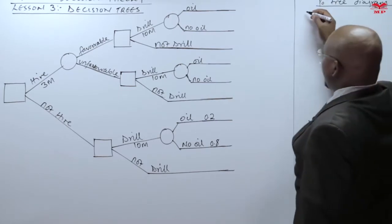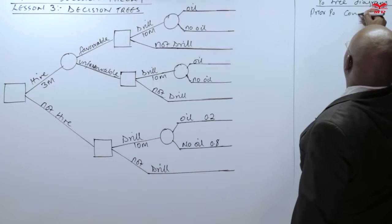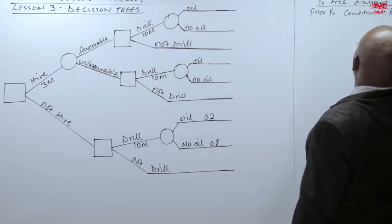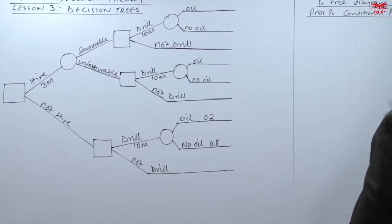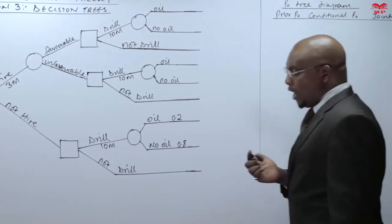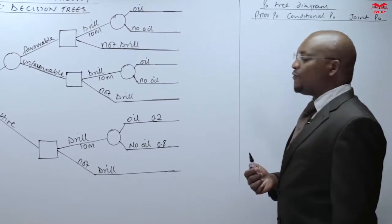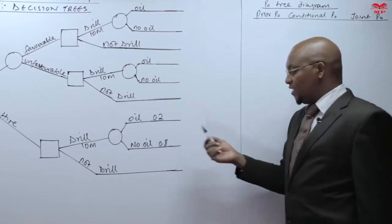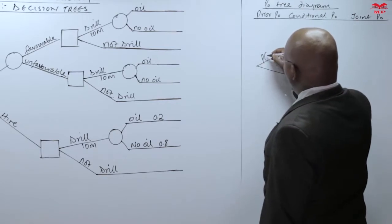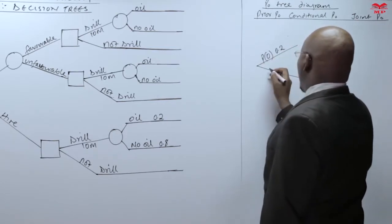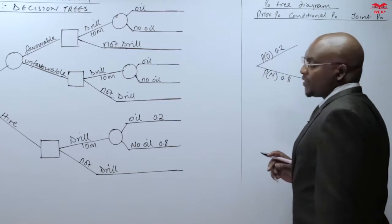In the probability tree diagram, we indicate the prior probability, the conditional probability, and the joint probability. Prior probability is from our current experience and knowledge — we know that we may have oil or no oil with a probability of 0.2 and 0.8 respectively. So probability of oil is 0.2, while probability of no oil is 0.8.